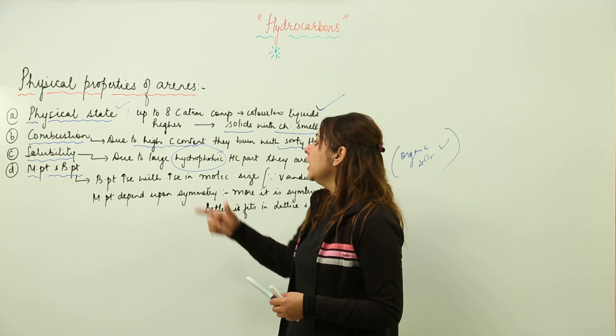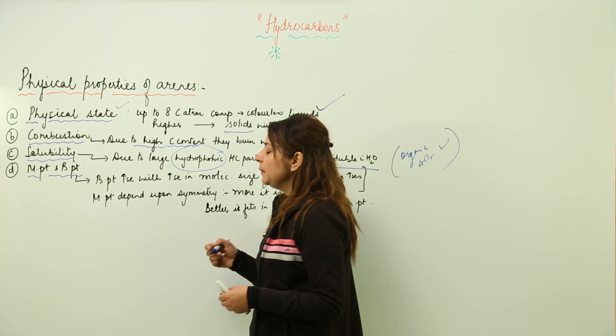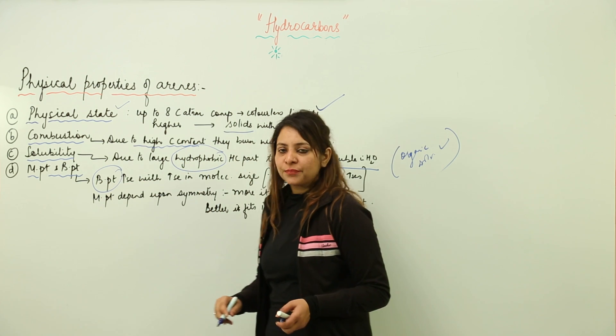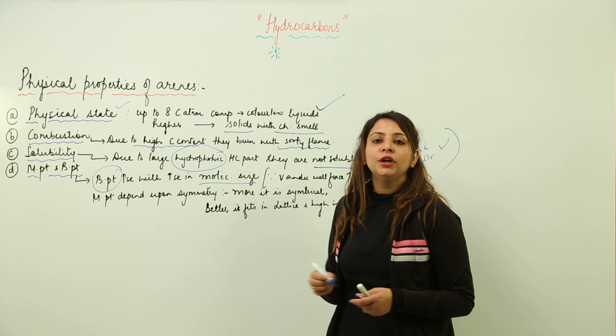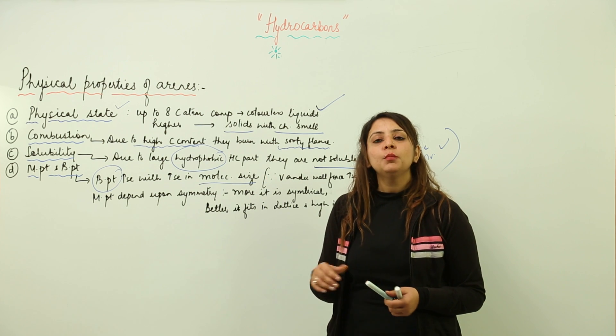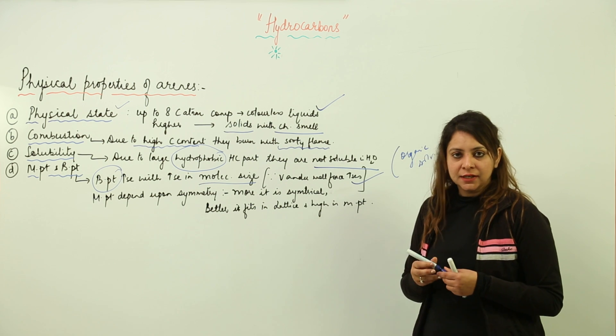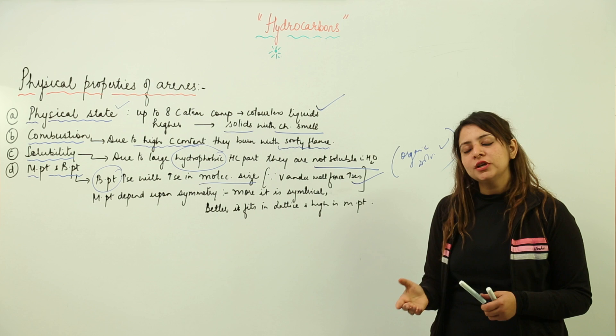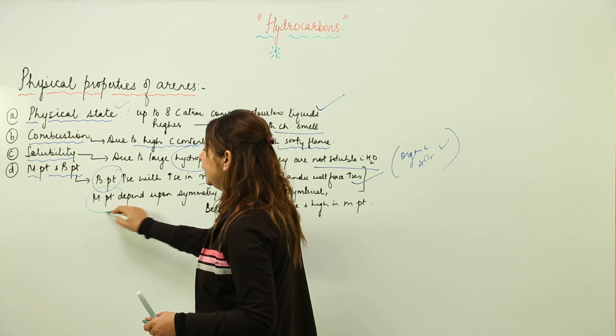Next is melting and boiling point. If we consider boiling point first, we have seen that boiling point increases with the increase in molecular size, because when molecular size increases, the strength of Van der Waals forces also increases. More area means more Van der Waals force, so obviously the boiling point is higher.